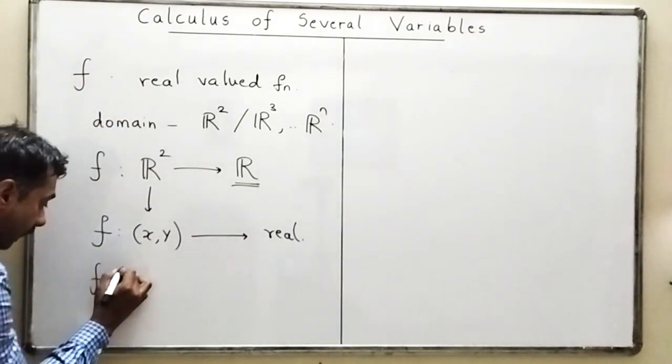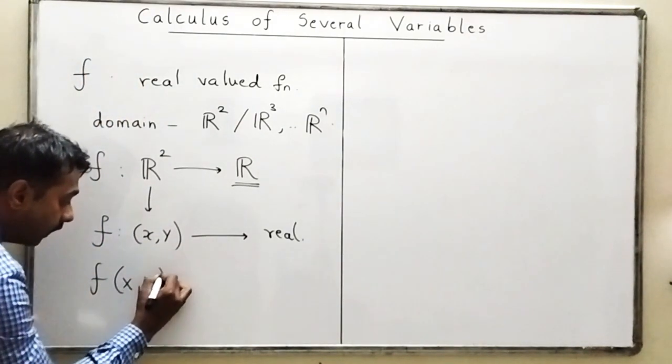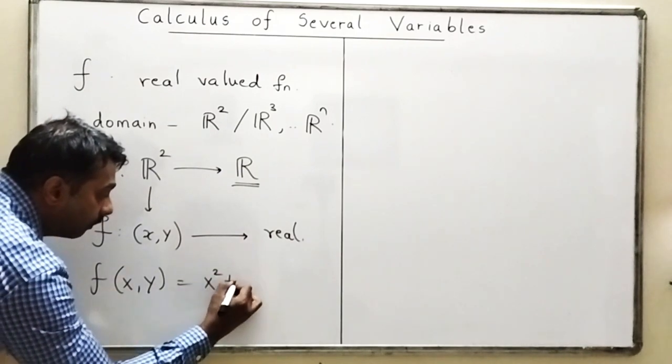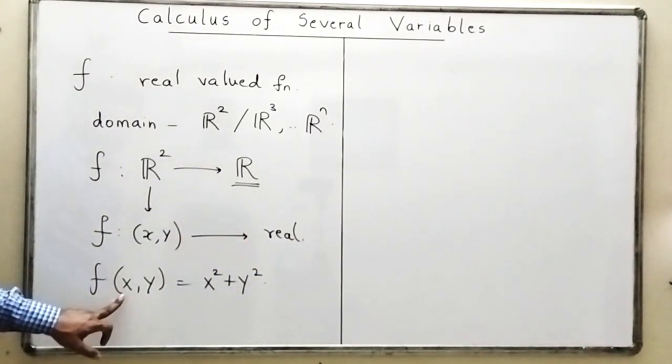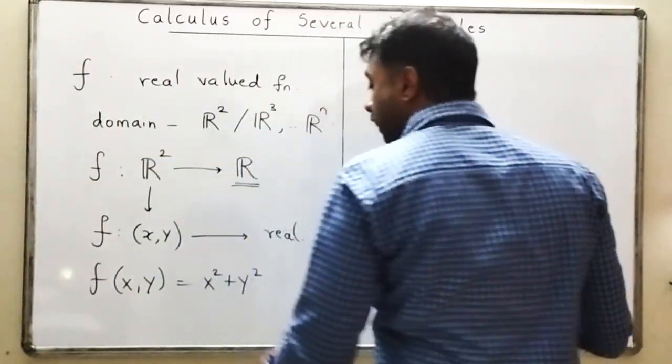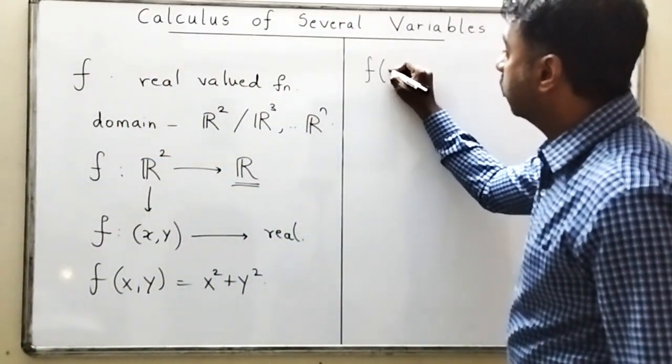I will take f(x,y) = x² + y². Now this is a function which is giving the output as a real number.